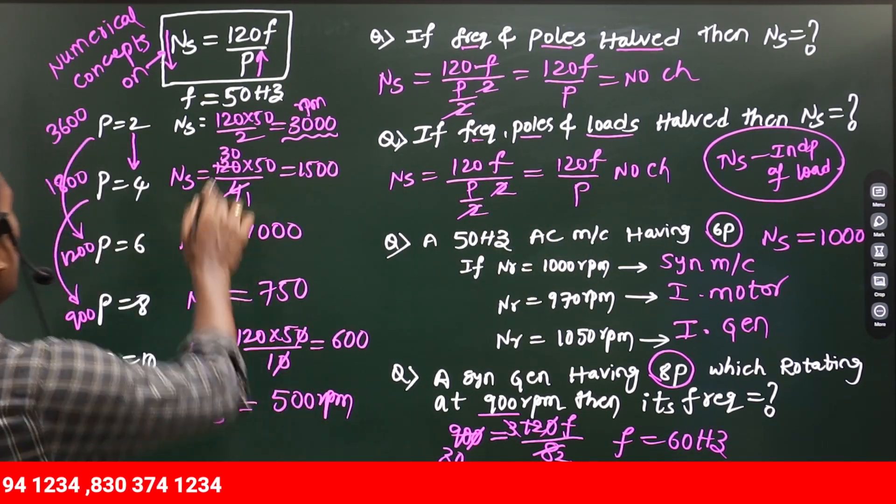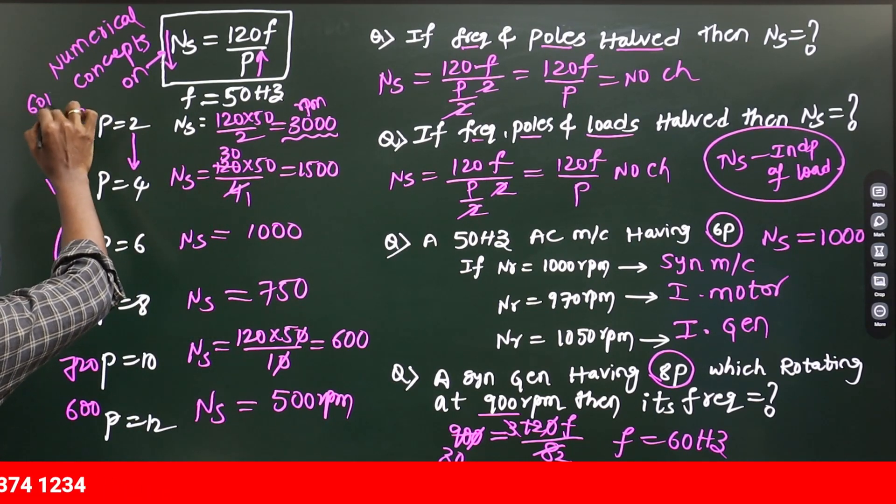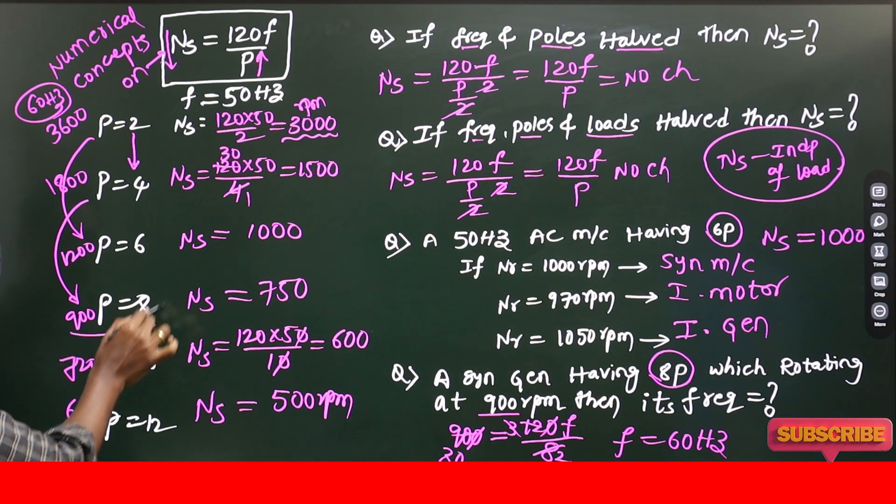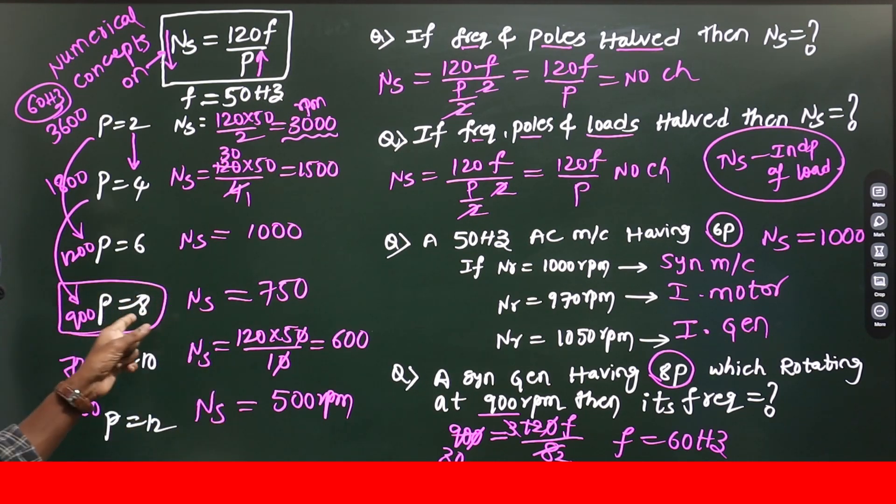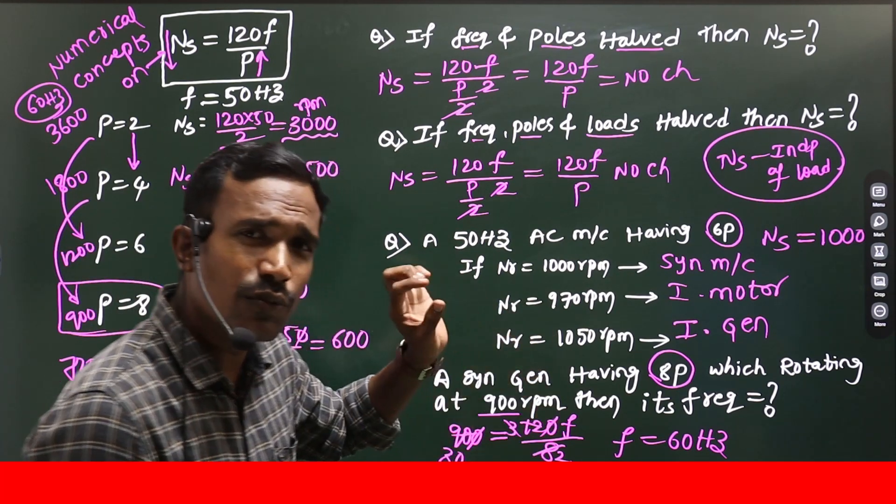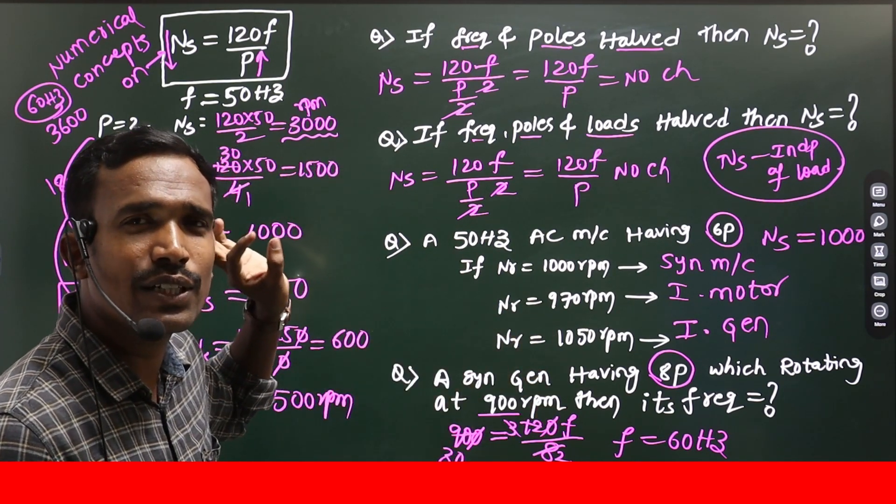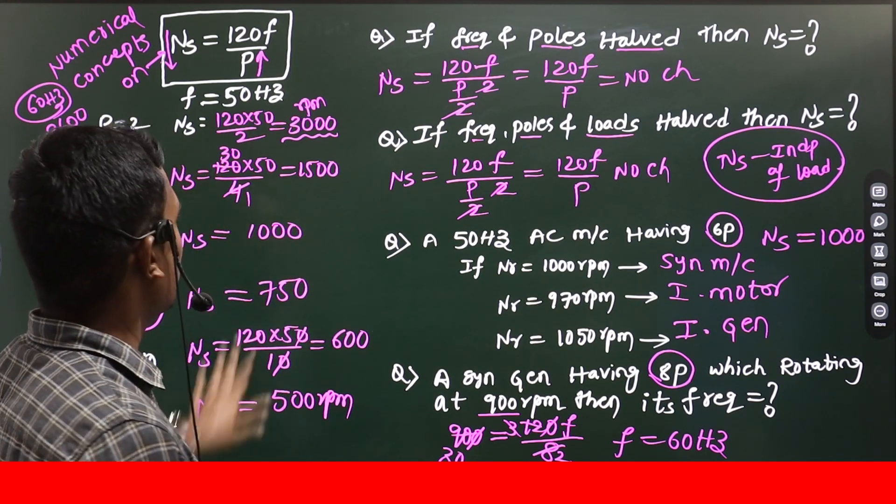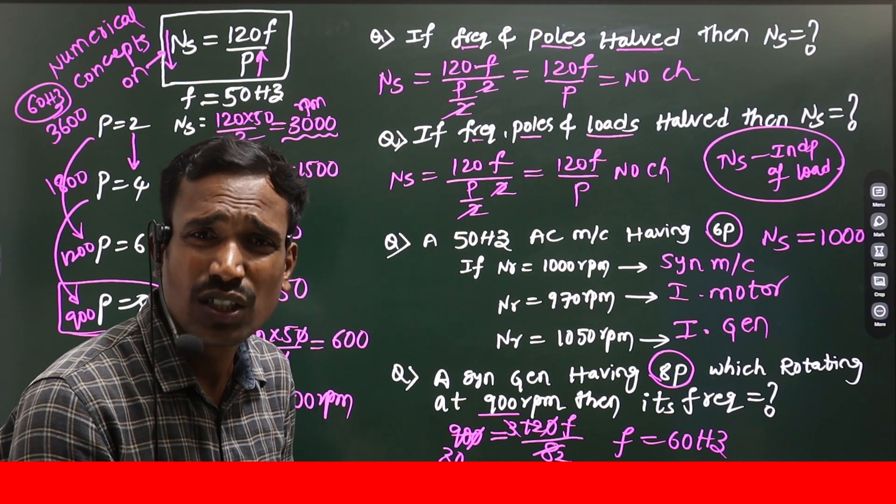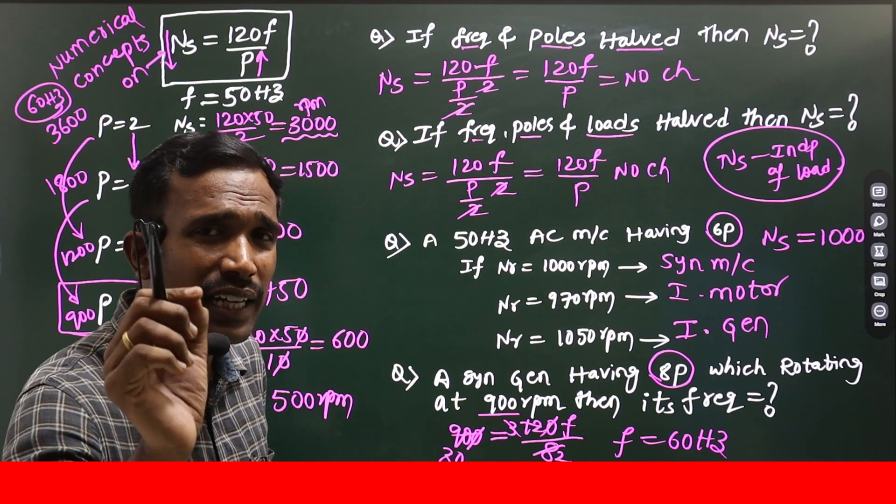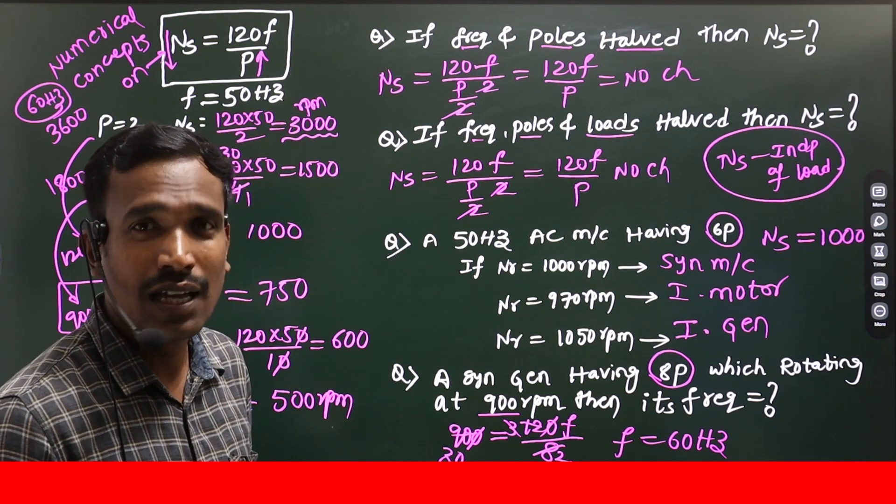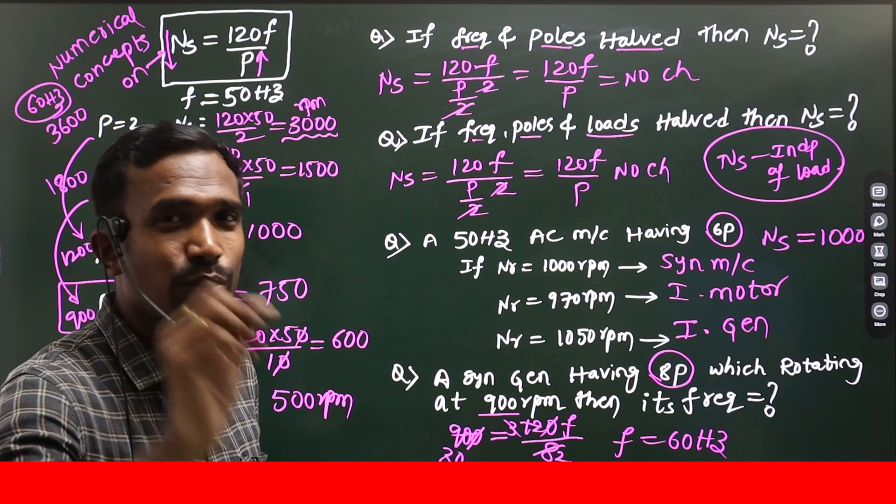But, if you know for 60 hertz, for 60 hertz, the synchronous speed, see here. For 60 hertz, 8 pole 900 rpm already given. So, just when you see the question, you will deliver your answer if you know these values perfectly. Otherwise, you need to recheck again. You need to calculate again. Every second is important for us in our competitive examinations. One second will decide your life.